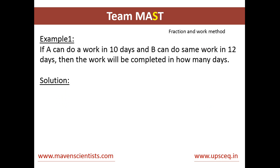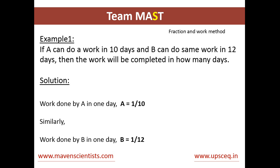Let's see an example to understand this problem. If A can do a work in 10 days and B can do the same work in 12 days, then the work will be completed in how many days? First of all, we will calculate the work done by A in 1 day, which is equal to 1 divided by 10. Similarly for B, the work done by B in 1 day is equal to 1 divided by 12.